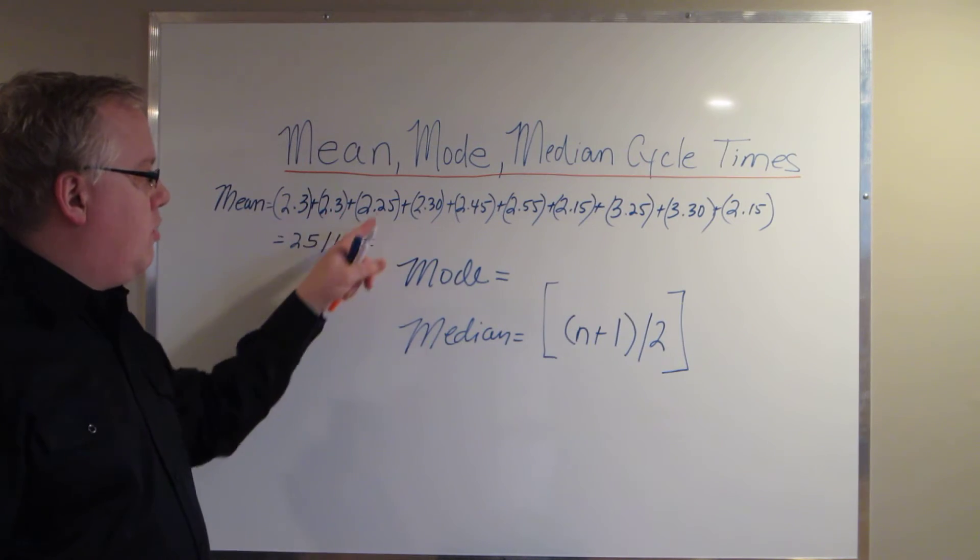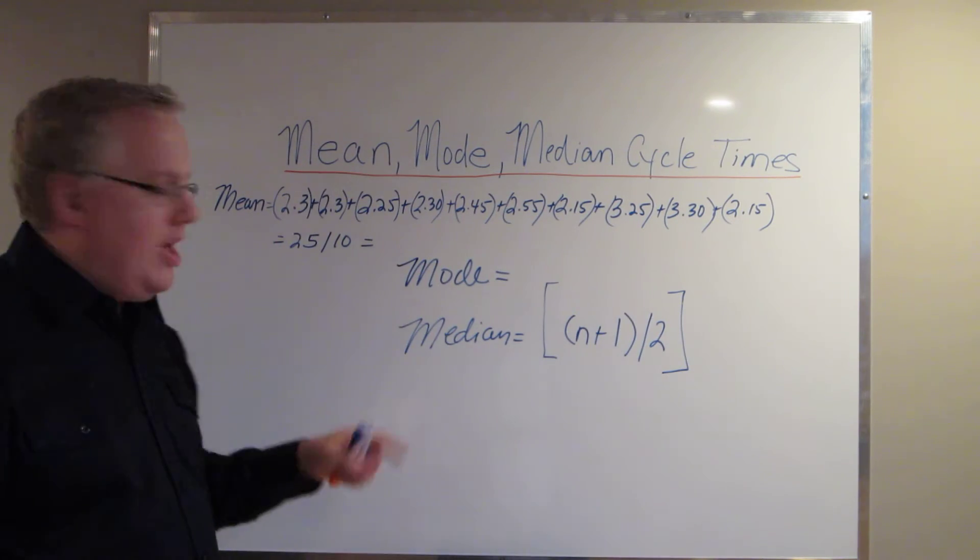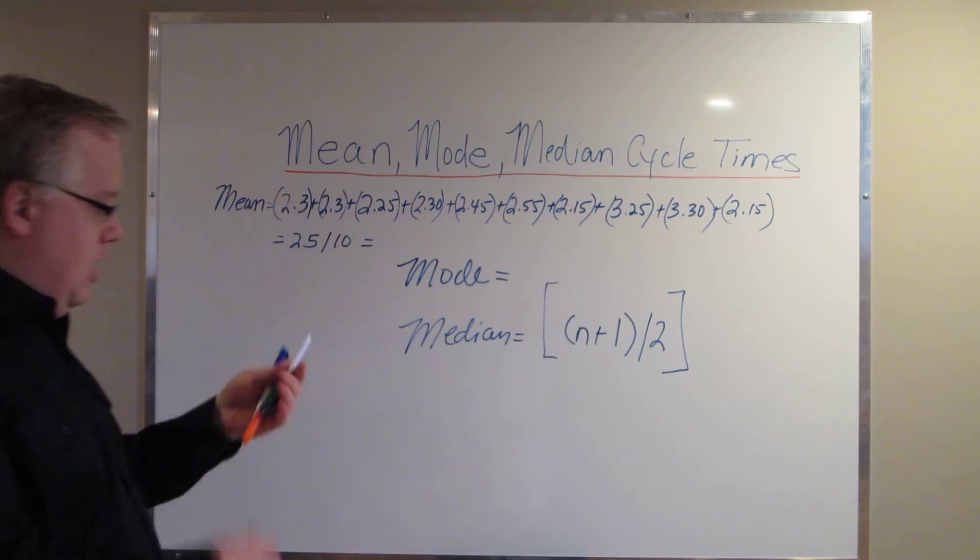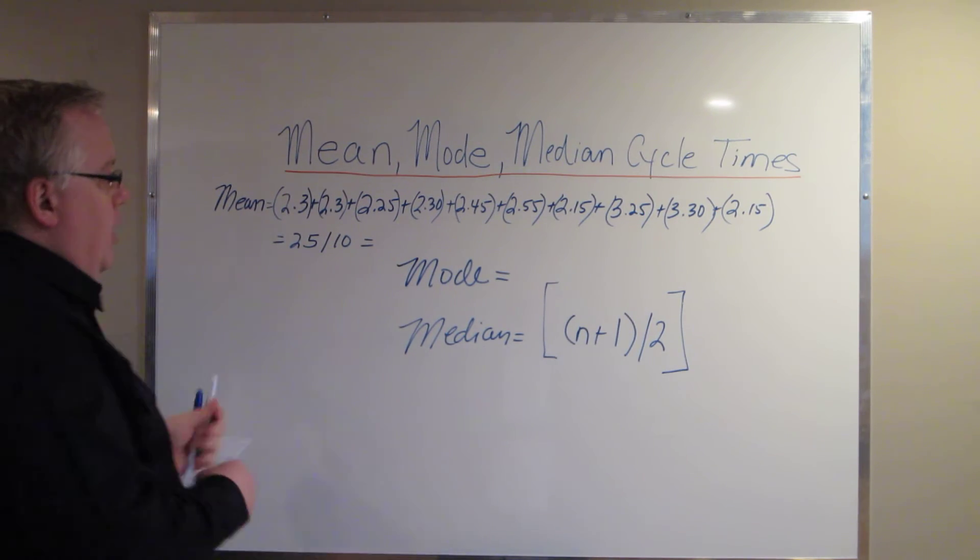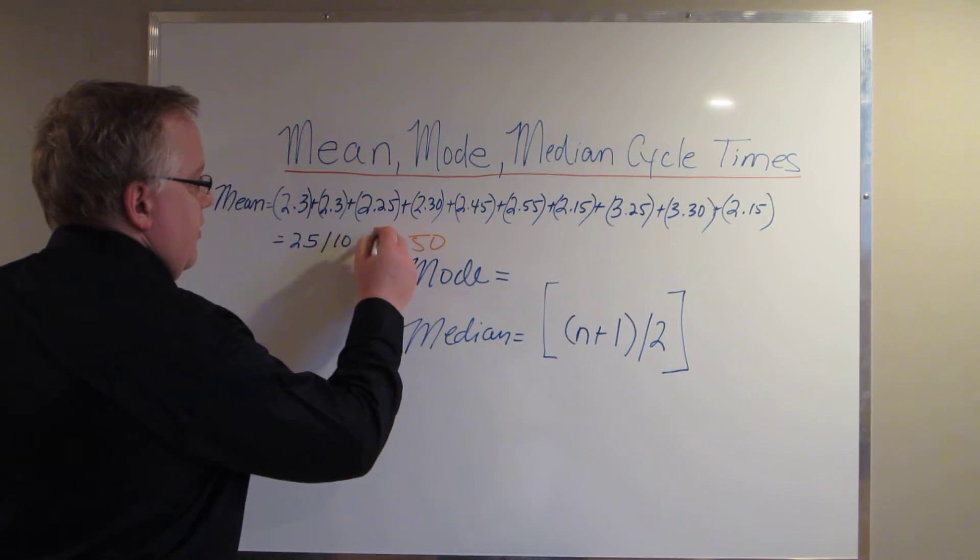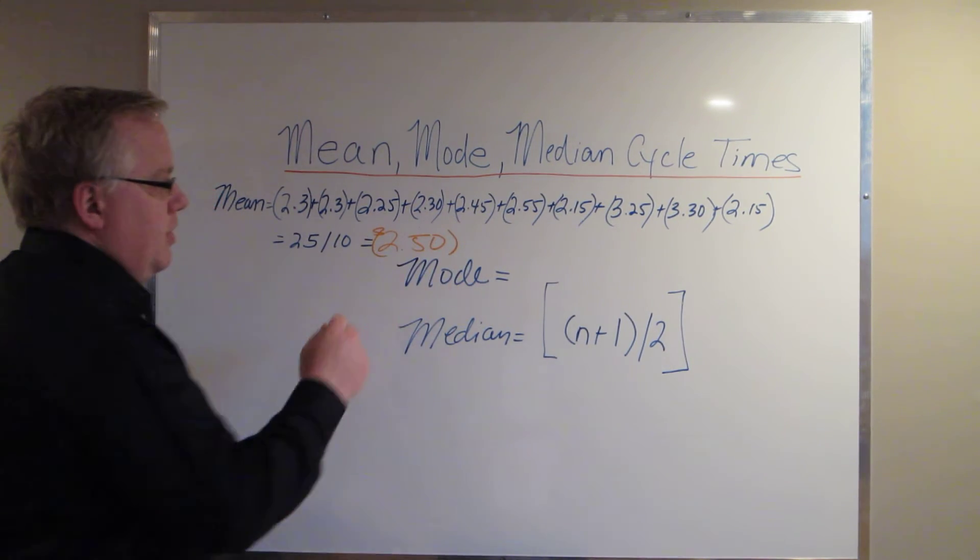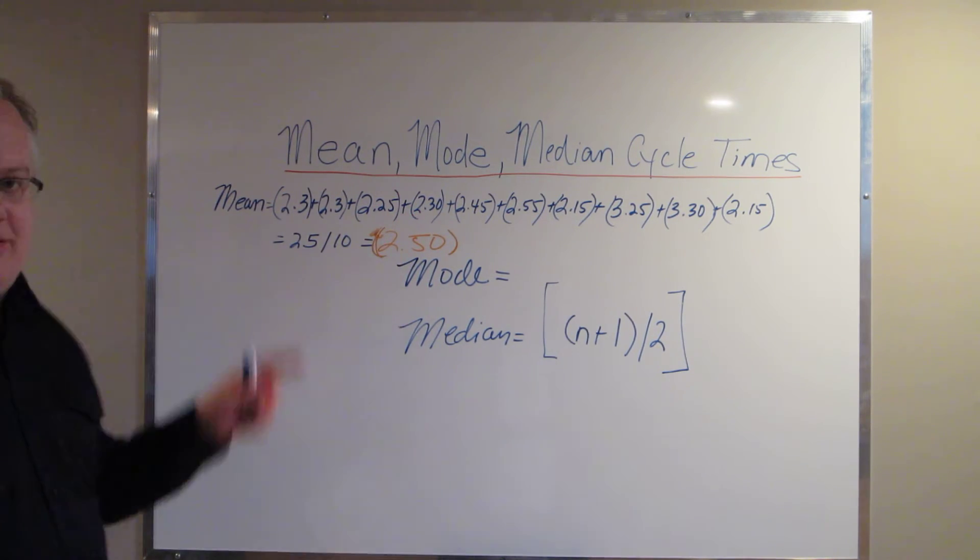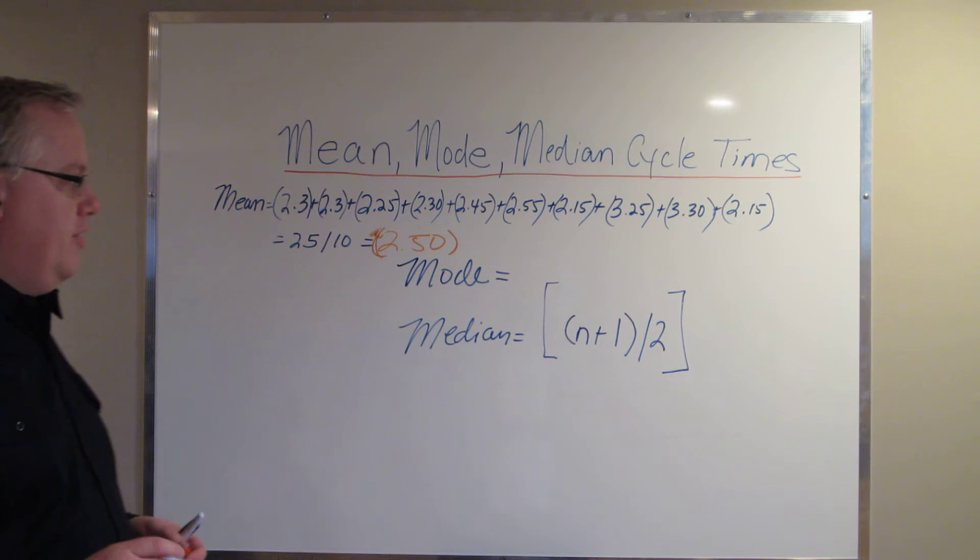All these numbers added together gives you 25, divided by the number of operations, which is 10. And that would give you 2 minutes and 50 seconds as an average cycle time. So in this case, it's 2 minutes and 50 seconds as an average cycle time. And that's the mean. That's what we know as average.